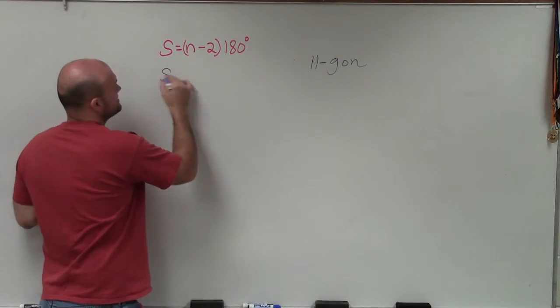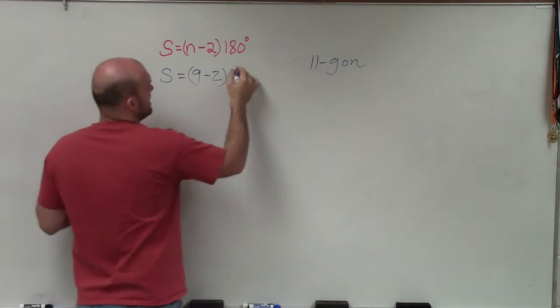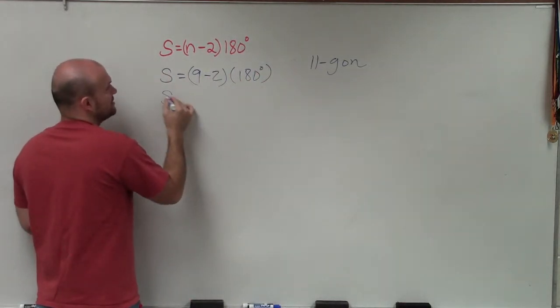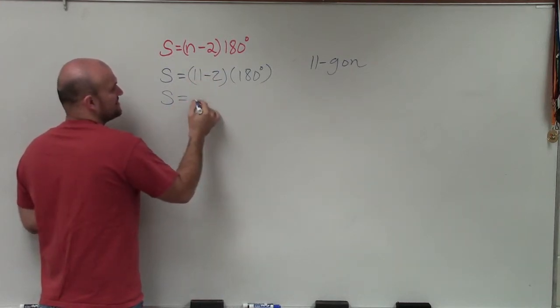So therefore, I have S equals 9 minus 2 times 180 degrees. Following order of operations, I'll subtract here first. I'm sorry, I was thinking ahead. It's an 11-gon, so there's 11 sides. So therefore, I get 9 times 180.